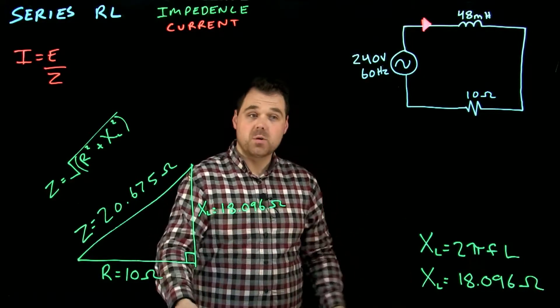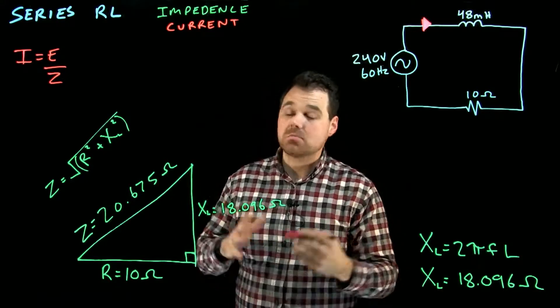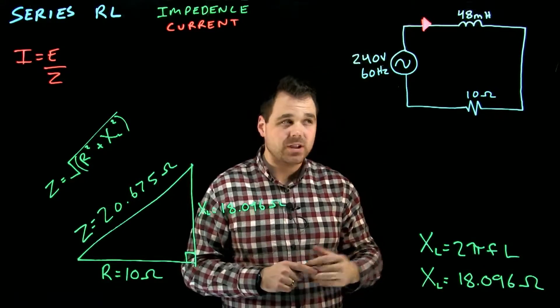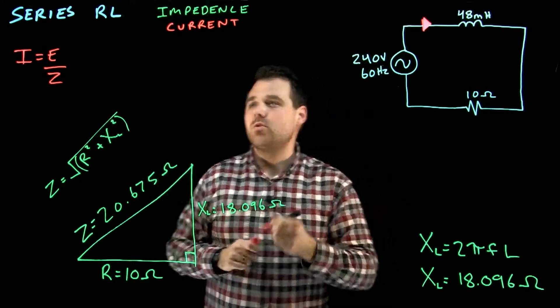What we do with that and what you want to do next is now that we know our total voltage, it was given in this case, won't always be given. Sometimes we'll have to calculate it or sometimes we'll have to use other values. In this case it was given. We can now fill in this formula.